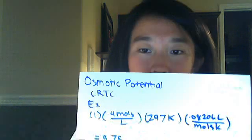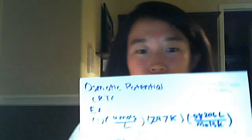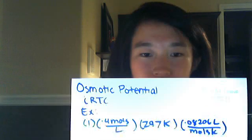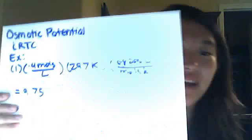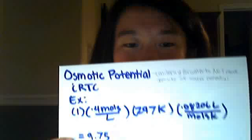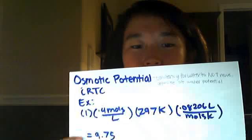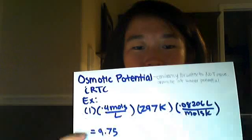But that's just water potential. There's a difference between water potential and osmotic potential. Osmotic potential is the tendency for water to not move, so it's going to be the opposite of water potential. Obviously if water potential is negative iRCT, then osmotic potential is going to be iRCT. So you just take away the negative and you get 9.75. That is your answer.